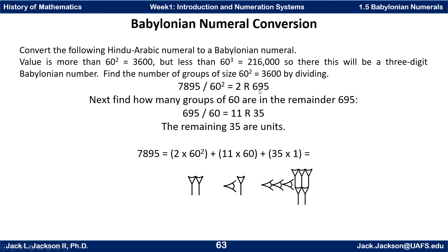Then we see how many groups of 60 are in the remaining 695. We divide by 60 and get 11 remainder 35. You could do this by long division or with a calculator. So we get 11 groups of 60 — represented by this symbol — and 35 units as the remainder. So 7,895 is two groups of 60-squared, plus 11 groups of 60, plus 35 singles, giving us digits 2, 11, and 35. The digit for 35 is made up of three 10s and five 1s.